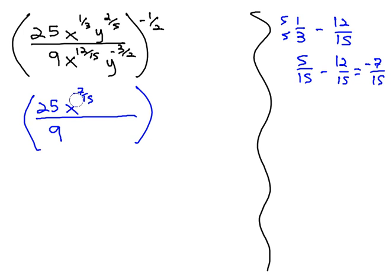We now have x to the negative 7/15. However, that negative exponent is going to move that x down to the denominator. So let's move that x down, making it a positive 7/15.